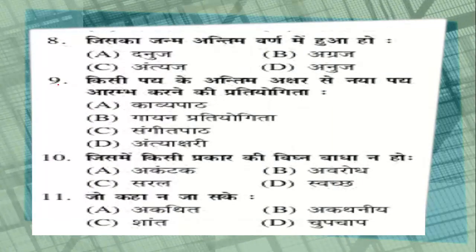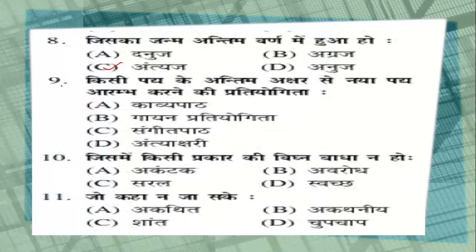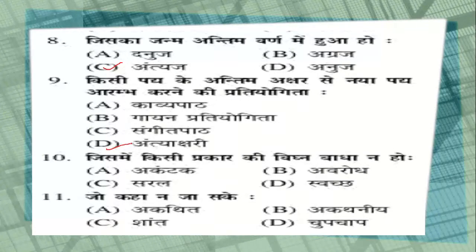Question number 8: जिसका जन्म अन्तिम वर्ण में हुआ हो — options: दनुज, अग्रज, अन्त्यज, या अनुज. The correct answer is option C, अन्त्यज. Question number 9 — a very important question: किसी पद्य के अन्तिम अक्षर से नया पद्य आरंभ करने की प्रतियोगिता — options: काव्य पार्ट, गायन प्रतियोगिता, संगीत पार्ट, or option D: अन्त्याक्षरी. You all must have played अन्त्याक्षरी as children — the answer is option D, अन्त्याक्षरी.